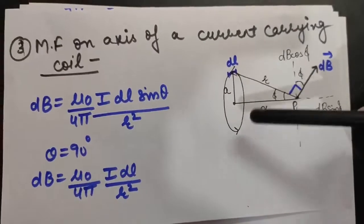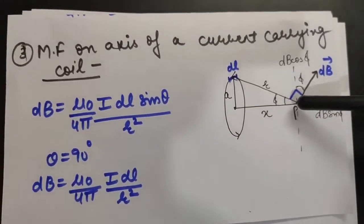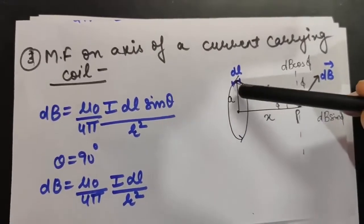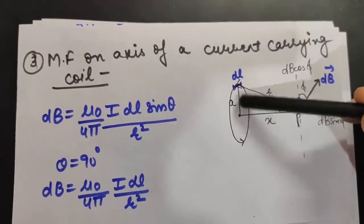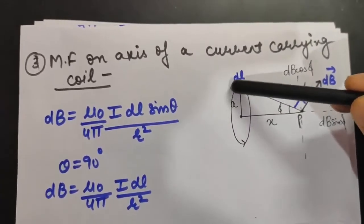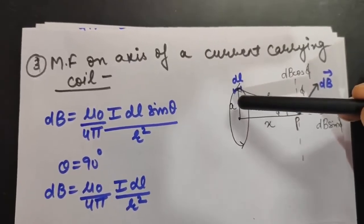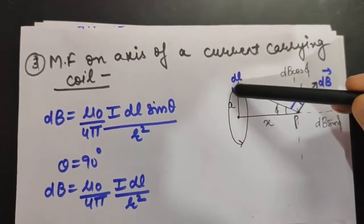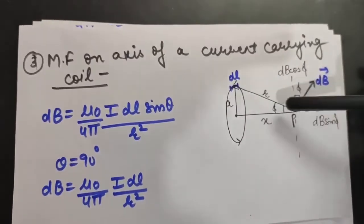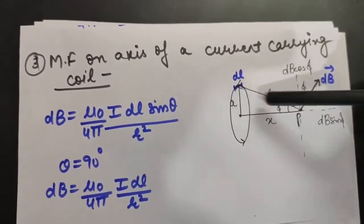Here we have a coil which carries a current in anti-clockwise direction. We want to calculate the magnetic field at point P which is at a distance x from its center. Let us say A is the radius of this coil, and let us suppose we choose an element DL here. The direction of DL is in the same direction as current. DL will be in this direction and the distance between DL and the point where we want to calculate the magnetic field is R.